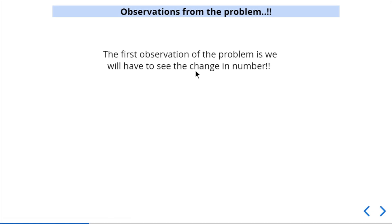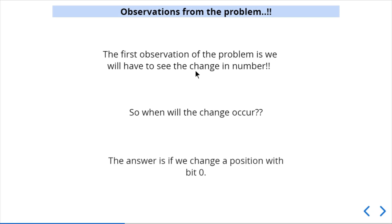From the problem, the first observation is that we need to detect when a number is changing. We can observe a change if we are able to convert a bit with value 0 to 1 — that is how we produce a new number. Let's see this with an example.